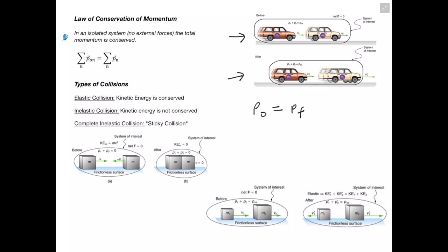Next we'll talk about the different types of collisions. In an elastic collision, kinetic energy is conserved. In an inelastic collision, kinetic energy is not conserved. We also have a special case called a completely inelastic or sticky collision, where the final kinetic energy equals zero. In the first example, two objects with the same mass and velocity move toward each other. After they collide, their velocities cancel out, giving a final velocity of zero. They stick together — which is why it's called a sticky collision — and since velocity equals zero, the final kinetic energy is also zero, so kinetic energy was not conserved.